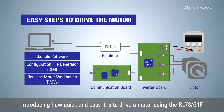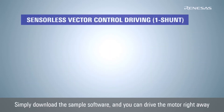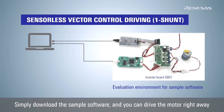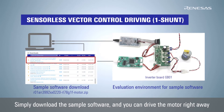In this first video, we will show you how easy it is to drive a motor even when you change the motor or inverter board. If you are using the evaluation environment for the sensorless vector control sample software on the Renesas website, you can download the sample software, program it to the microcontroller on the inverter board using the E2Lite emulator, and immediately drive the motor using the one-shunt resistor current detection method.